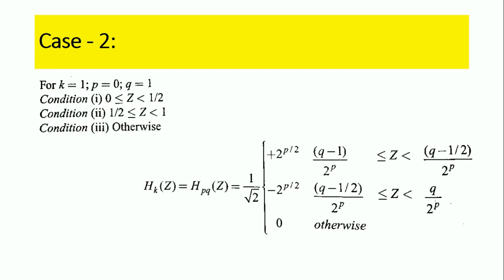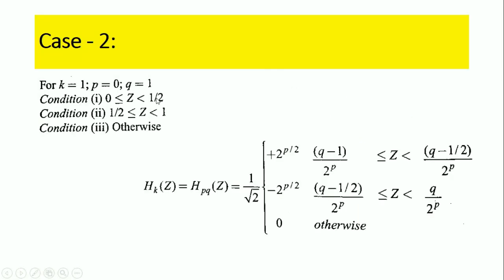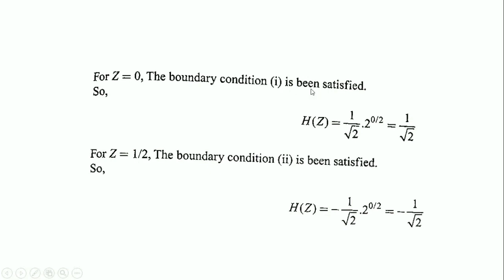Case two: for k equals 1, p equals 0, and q equals 1. The z value is split into conditions: 0 ≤ z < 1/2 and 1/2 ≤ z < 1, and otherwise. When z equals 0, boundary condition one is satisfied and h(z) equals (1/√2) · 2^(0/2) equals 1/√2. When z equals 1/2, boundary condition two is satisfied and h(z) equals −(1/√2) · 2^(0/2) equals −1/√2.